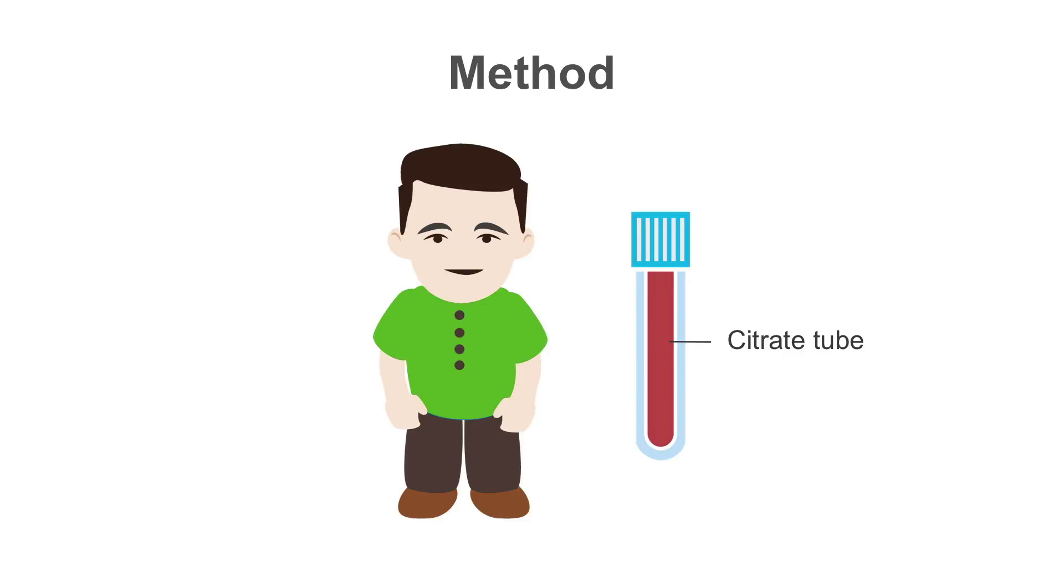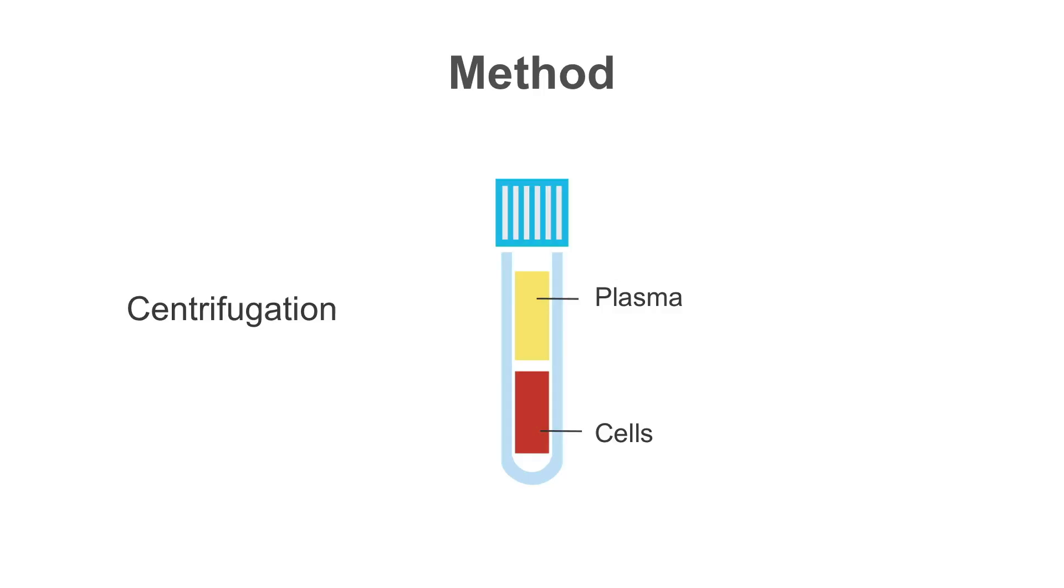To test for PT, the patient's blood is collected in a citrate tube. The blood is centrifuged to separate the plasma. Testing will be done on the plasma portion.